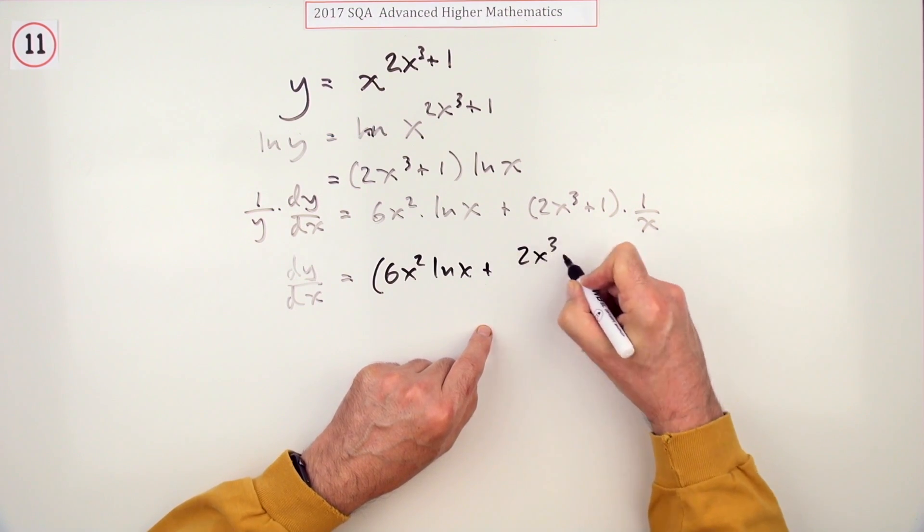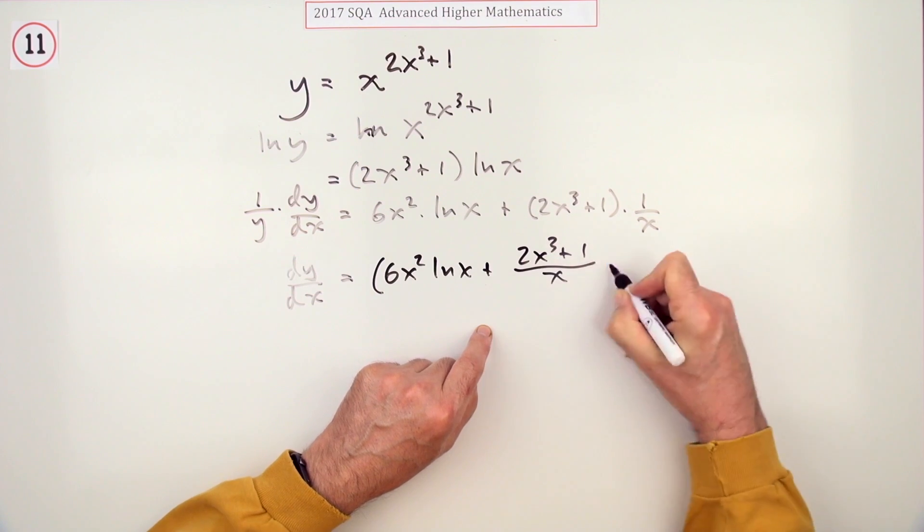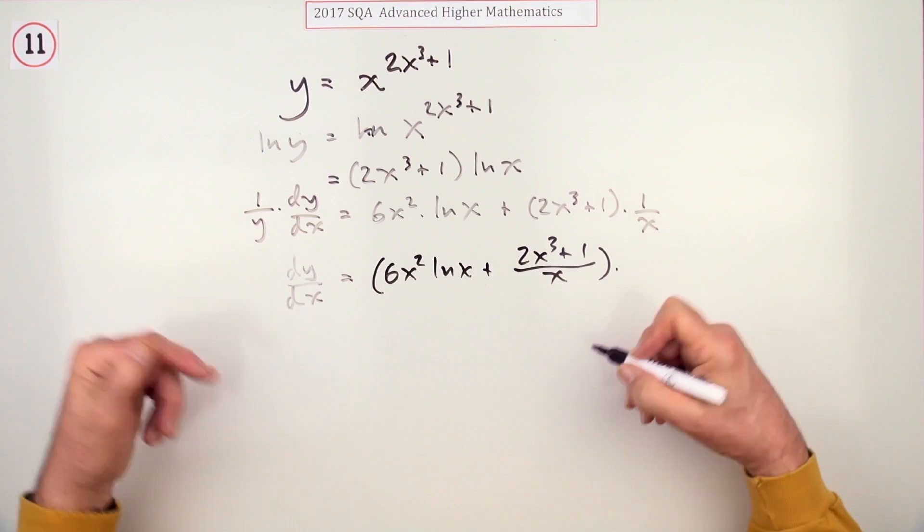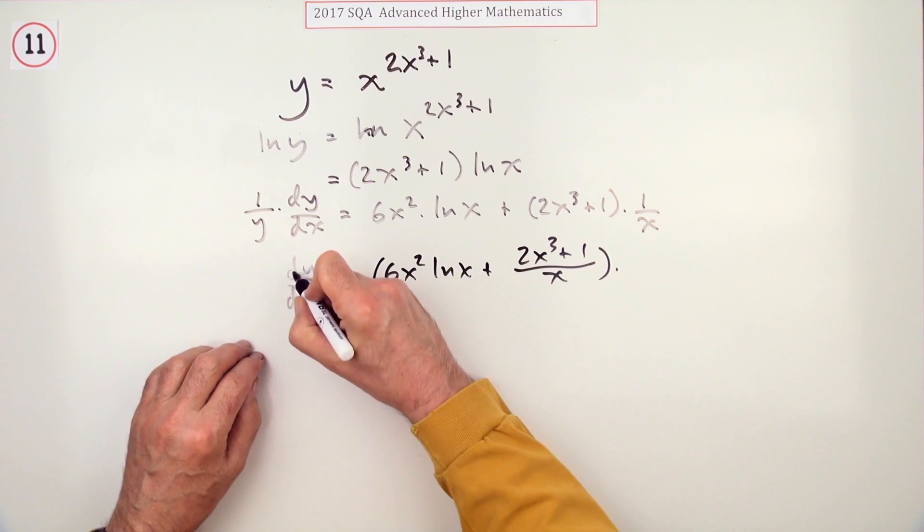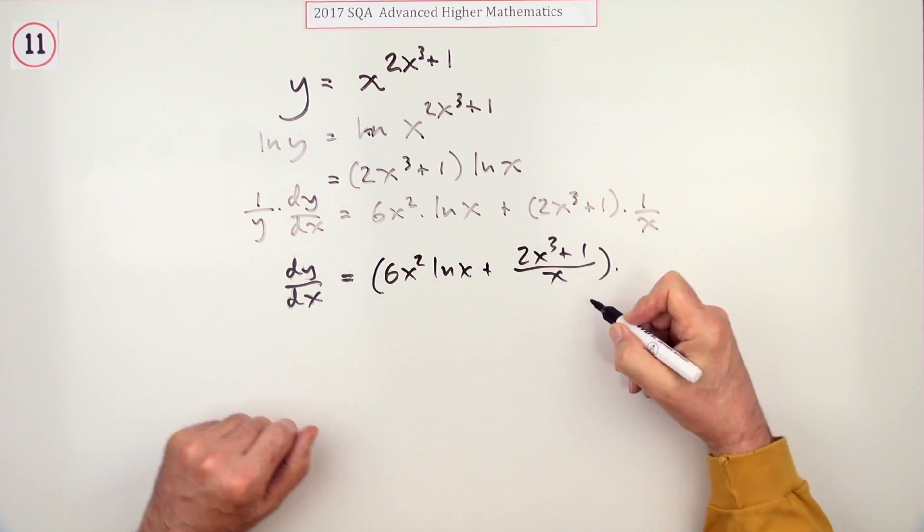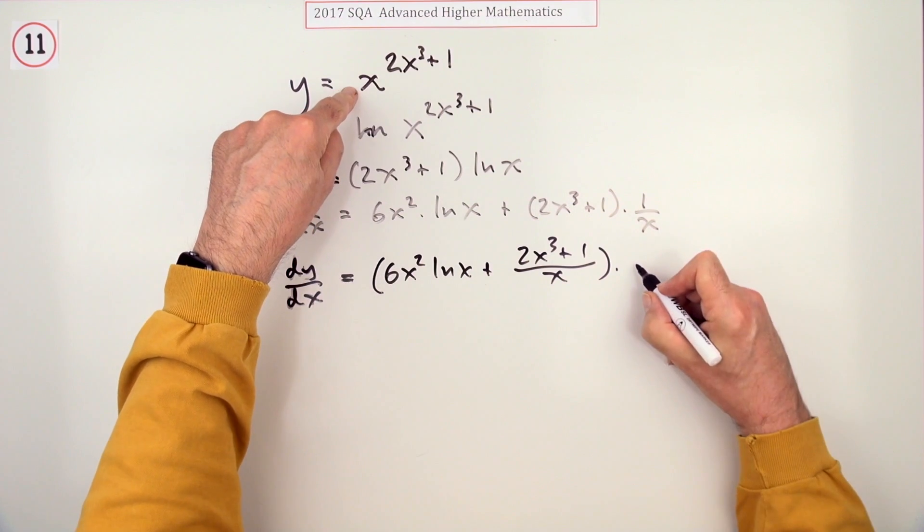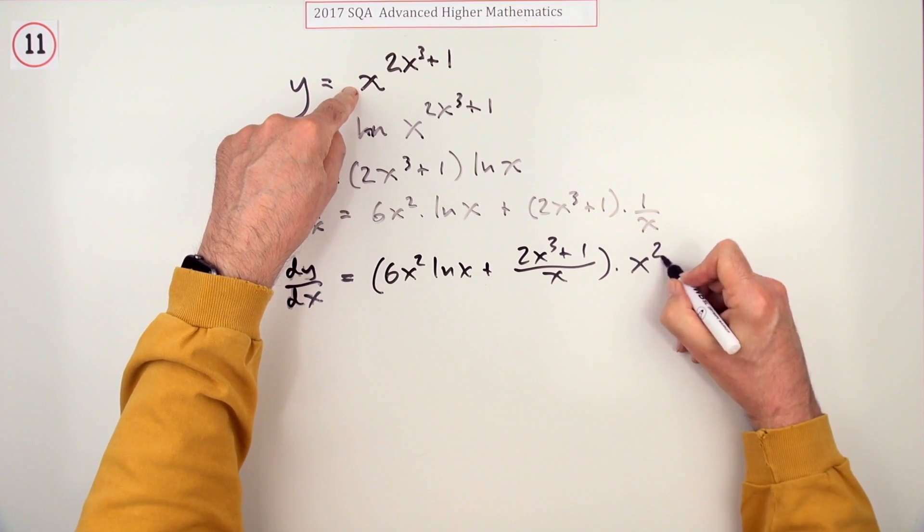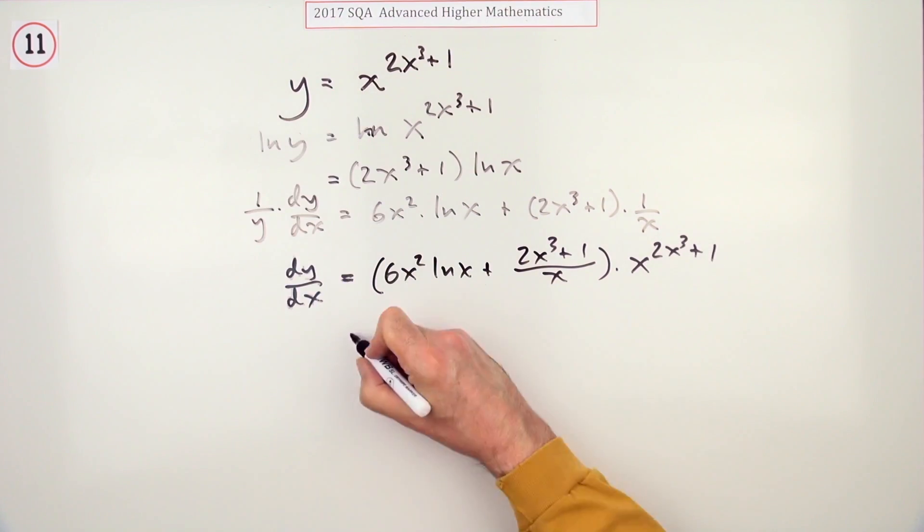So keep this together just now, that's a lot better. 6x squared ln x plus, now that's all over x, I'll just leave it that way. 2x cubed plus 1 over x multiplying by y, but I'm not going to write another line just so I can write y times it. Well let's shade you in where we're at.